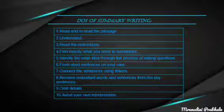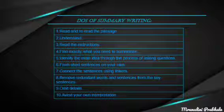The next point is: omit details. In the passage, the author gives examples, explanation, and interpretation to emphasize a point. When you start summarizing, omit or avoid such examples, explanations, and interpretations given by the author. The last and most important point is: avoid your own interpretation. A summary should not include your opinion about the subject matter or the author's argumentative strategy, even if you disagree with the content. You must relay only the factual elements.